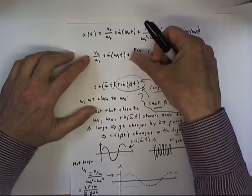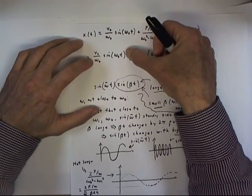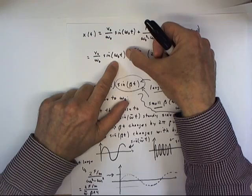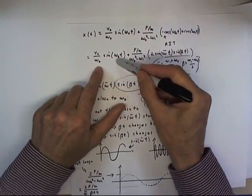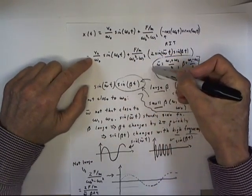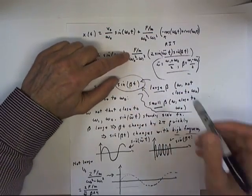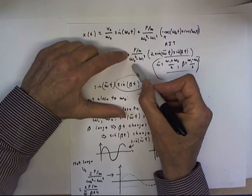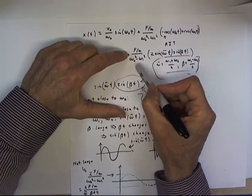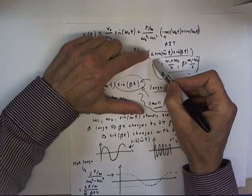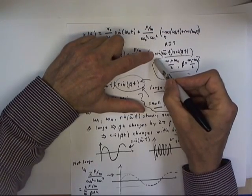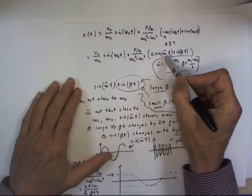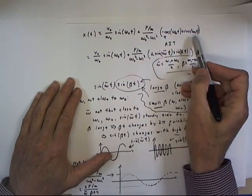To understand this solution, let's first observe that this term, d-naught over omega-naught sine of omega-naught t, is going to be the same whatever the driving frequency of the external force might be. This doesn't depend on omega-1 at all — it's just a steady sine function with an angular frequency of omega-naught. The other term here is going to have an amplitude which is large when omega-naught is close to omega-1, and small when they are very different. It is multiplied by sine of omega-bar t, which is an oscillation with a frequency omega-bar, the average of omega-naught and omega-1.